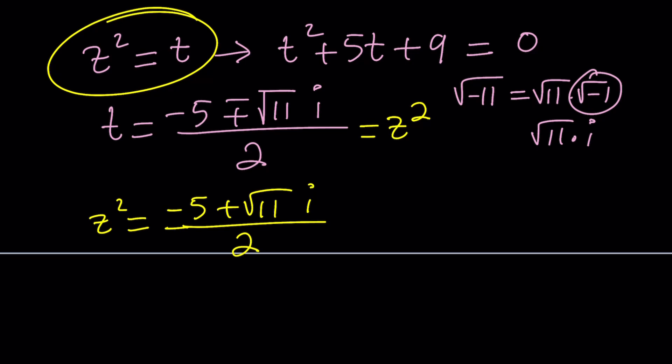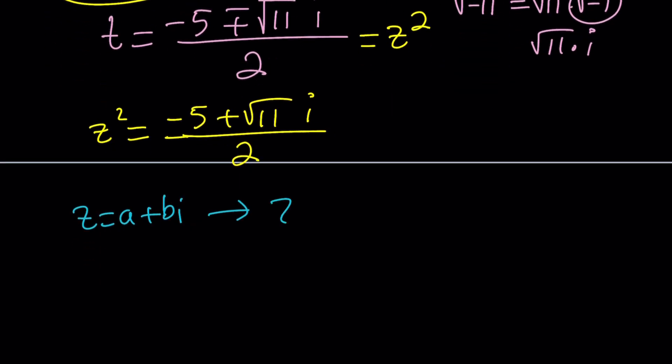We need to take square roots. We talked about square roots of complex numbers in the lecture videos. There are two main paths here. You can replace z with a plus bi and solve for a and b. But in this case, we're going to use a special property of this expression. I'm going to multiply the top and bottom by 2.